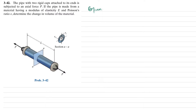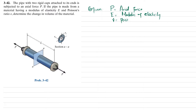Given data: P is the axial force, E is the modulus of elasticity, and nu is the Poisson's ratio. What we have to find is the change in volume of the material.